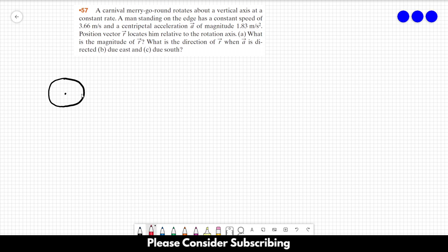Let's say that the man is here at the first moment and we want to find this distance here which is R. We know that its speed at that point is equal to 3.66 meters per second.